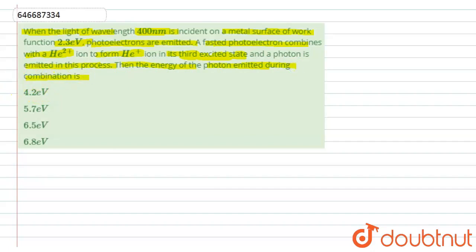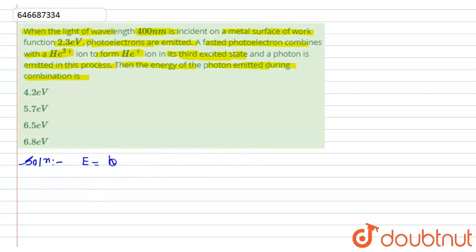For this solution, we need to find the energy of the photon emitted during combination. First, we find the energy of each photon: E = hc/λ = 1240/400 nanometers = 3.1 electron volt.